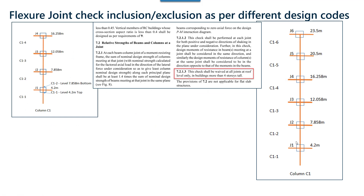The first point is how the flexure joint check is performed in RCDC for IS 13920-2016. As per clause 7.2.1.3, the code says that the flexure joint check should be performed at all joints of a column except the roof joint, only when the structure is greater than 4 storeys. In case 1, there are 4 levels starting from 4.2 up to 16.25, and the joint check at each joint J1, J2, J3, J4 will be performed.